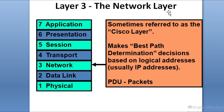The Network layer is responsible for selecting the best path for data to travel. For example, if you travel from Bangalore to Chennai, you choose the fastest and safest route — such as the national highway. Similarly, the Network layer selects the best path. It uses logical addresses, which are IP addresses. Data at this layer is called packets.